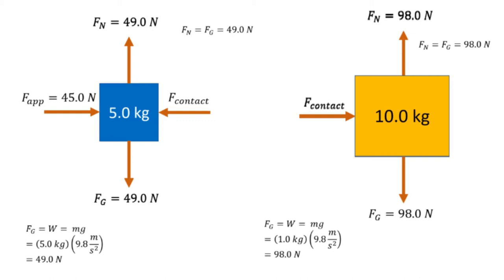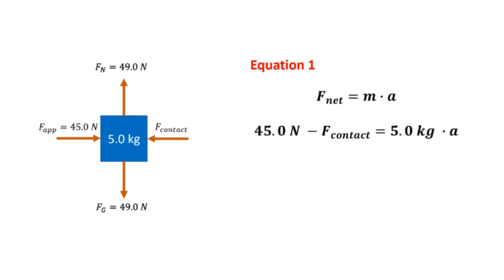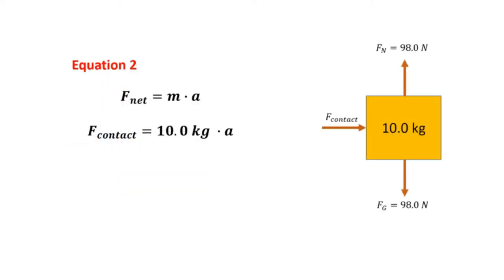Observing our diagrams, we have known values for the applied force, normal forces, and gravity force, but the contact force is unknown. To find the acceleration, we use the Second Law of motion. From the smaller box, the vertical forces cancel due to equal magnitude, so we consider only horizontal forces. The net force equation is: 45 newtons minus the contact force equals 5 kilograms times acceleration (Equation 1). For the 10-kilogram box, the vertical forces are balanced, so the horizontal equation is: contact force equals 10 kilograms times acceleration (Equation 2).